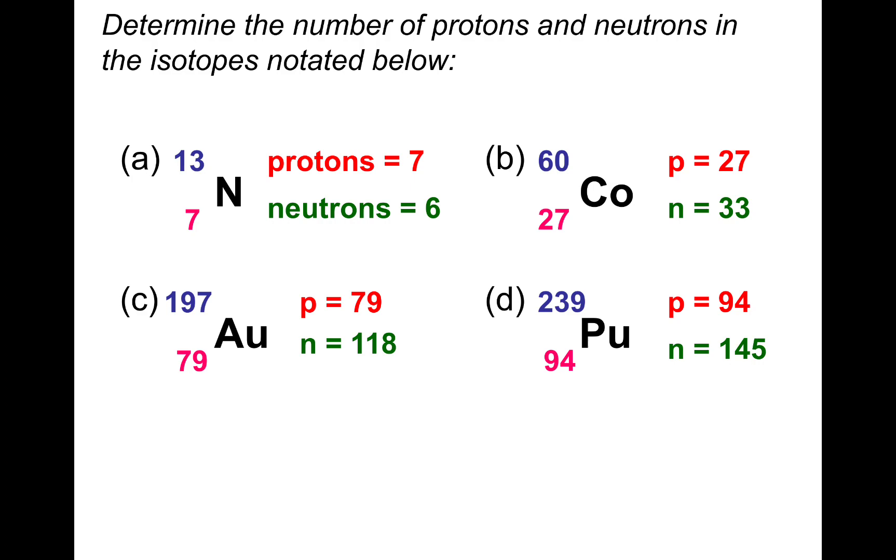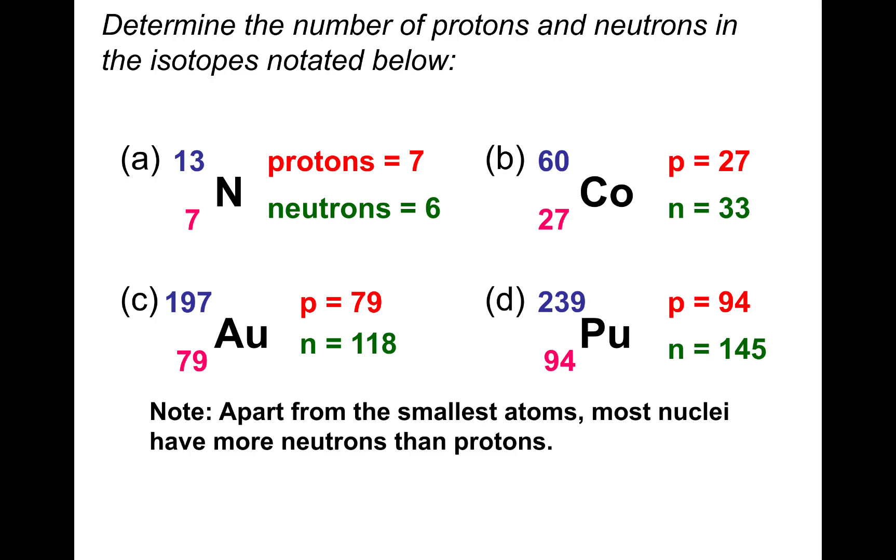So just out of interest, a little bonus: if these were all atoms, how many electrons would they have? The first one would be 7 electrons. Cobalt, the second one, would be 27 electrons. The gold would be 79 electrons. And the plutonium would be 94 electrons. Remember, atoms are neutral in terms of their charge. So they have the same number of protons as they do electrons. And apart from the smallest atoms, most nuclei have more neutrons than protons.